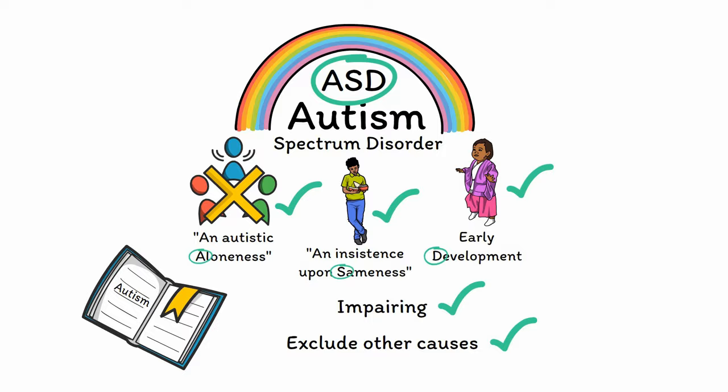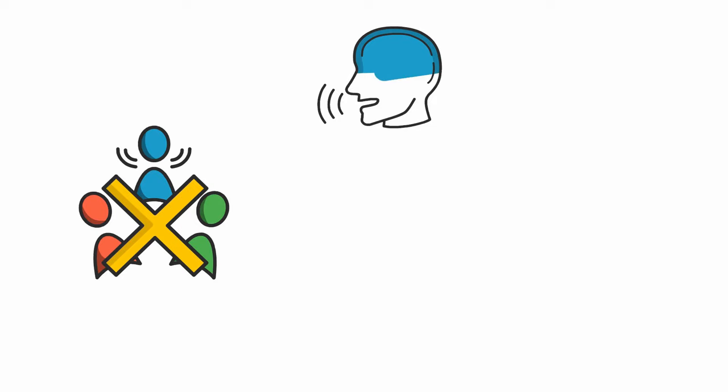First, deficits in social communication can manifest in various ways. Use of language is generally impacted, including both verbal and nonverbal communication. In fact, delayed speech development is the most common reason that children with autism come to clinical attention. While most children begin speaking around the age of one and can use short sentences by the age of two, children with autism often hit these milestones late or even never attain them at all. In its most severe forms, autism can rob patients of speech entirely, rendering them nonverbal for the rest of their life.